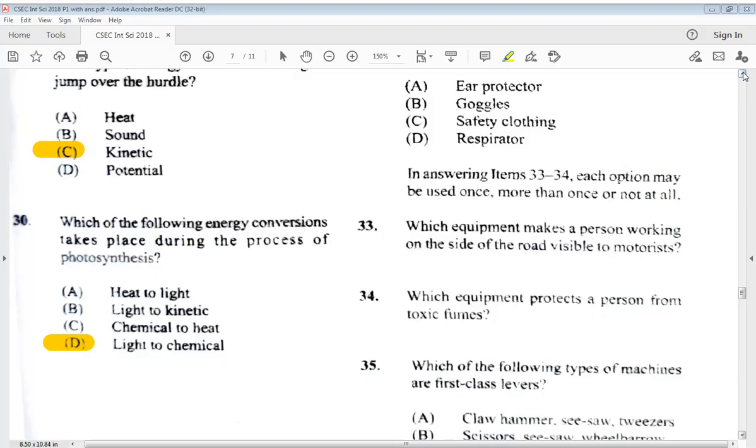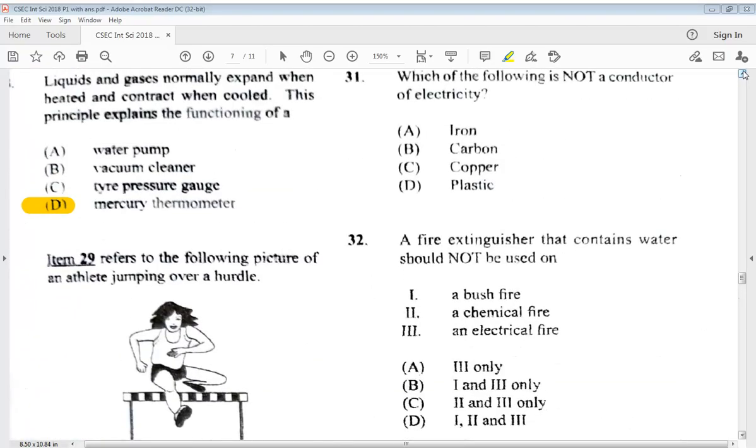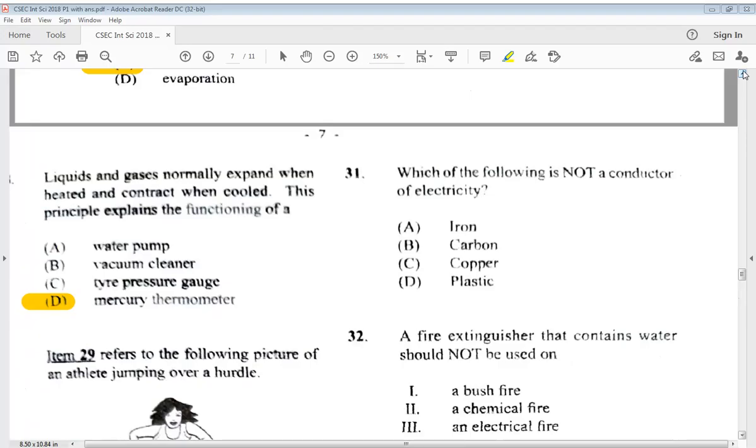Let's go to number 31. Here we go. So it says, which of the following is not a conductor of electricity? A, iron, B, carbon, C, copper, D, plastic. So we know the answer would be D, plastic.